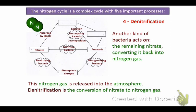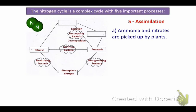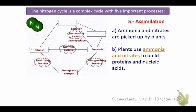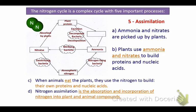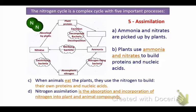Last step: assimilation. Ammonia and nitrates are picked up by plants, and the plants use ammonia and nitrates to build proteins and nucleic acids, which brings us back to the plant protein at the top. When animals eat the plants, they use the nitrogen to build their own proteins and nucleic acids. This is when nitrogen is incorporated into plant and animal compounds — eaten by animals, animal protein, the last two parts of that cycle.